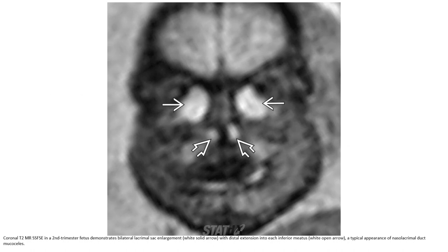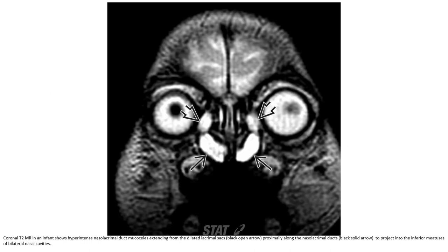G2 abnormal SSFSE includes a second trimester fetus demonstrating bilateral lacrimal sac augmentation with distorted extension into each inferior meatus, a typical appearance of naso-lacrimal duct mucocele. Also noted is hyperintense nasal lacrimal duct mucosa extending from the distal lacrimal sac along the nasal lacrimal duct projecting into the inferior meatus of the bilateral nasal cavity.